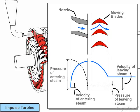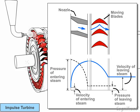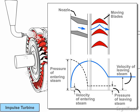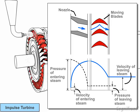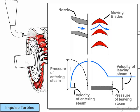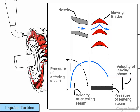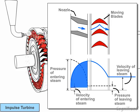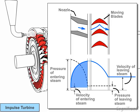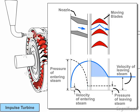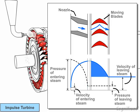Let us study the working of this turbine in detail. The diagram shows the principle behind the working of the impulse turbine. In this turbine, steam pressure remains constant while flowing through the moving blades. The velocity of the steam is very high while flowing through the nozzle and it decreases while flowing through the moving blades.